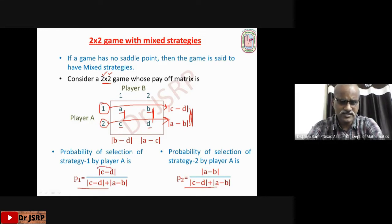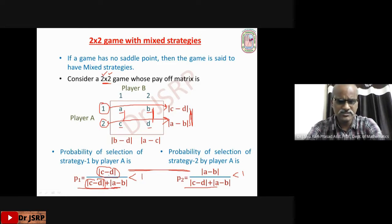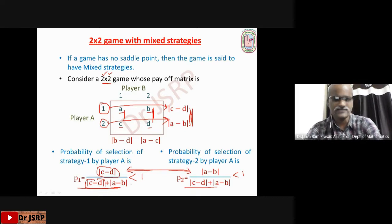Observe: here we have |C − D| in the numerator, and in the denominator we also have |C − D| plus some additional value, meaning the numerator is less than the denominator — so this value is clearly less than 1. Similarly, the other value is also less than 1. Both values are less than 1, and their sum equals 1, so these two values satisfy the probability property.